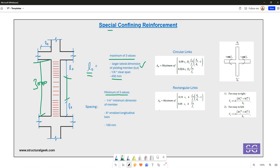It should also be six times the smallest longitudinal bar. So if you're having a 16mm bar in your columns as the main bar, six times 16 is 96mm.